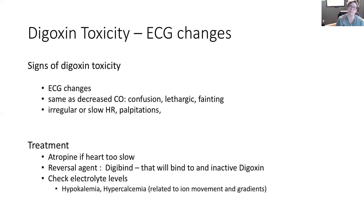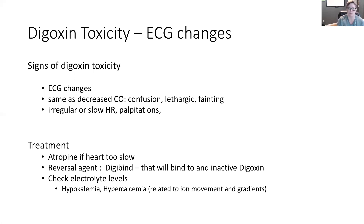The treatment would be to give atropine to increase the heart rate — that's one of the drugs on your drug sheet. There is also a reversal agent for digoxin toxicity called digibind, which binds to the digoxin and makes it inactive so it can be excreted. With digoxin, you want to be checking electrolyte levels — potassium and calcium — to ensure normal serum levels given that sodium-potassium pump exchange and the calcium staying intracellular.